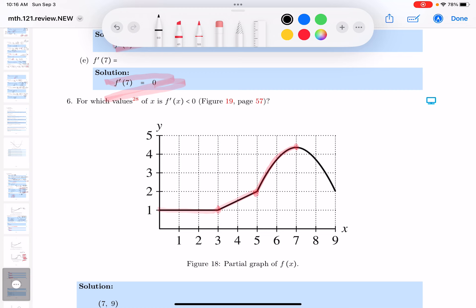Looking at the picture, it looks like from x equals 7, the slopes are going to be negative, and where does it stop? It stops at 9.